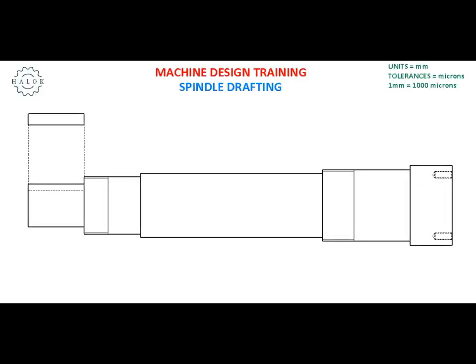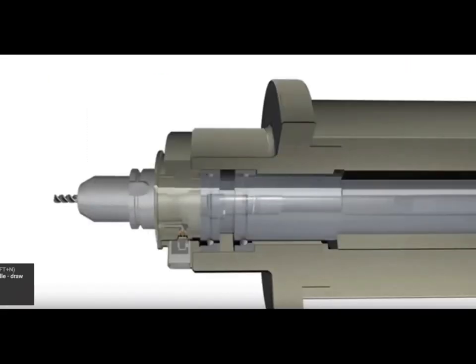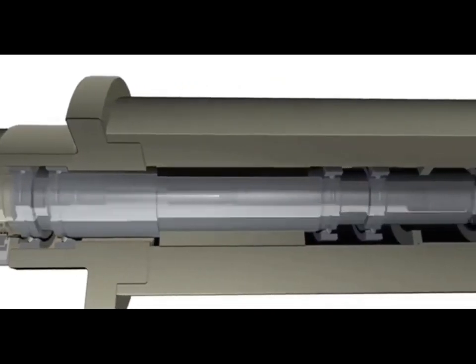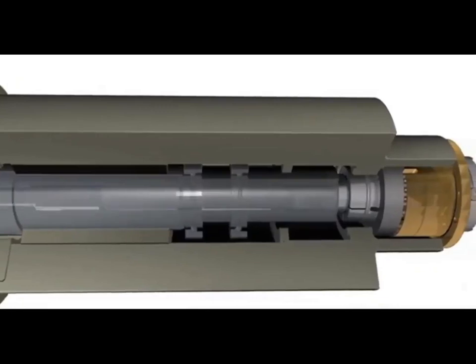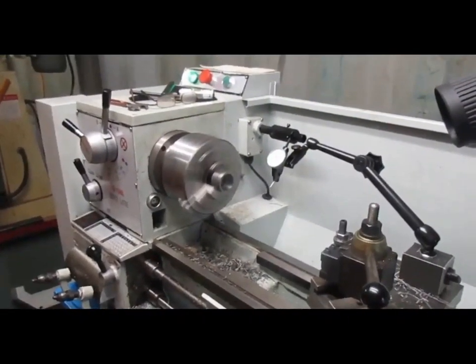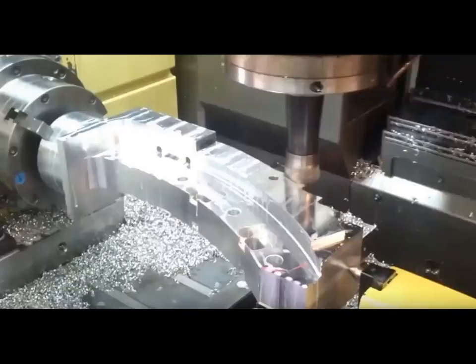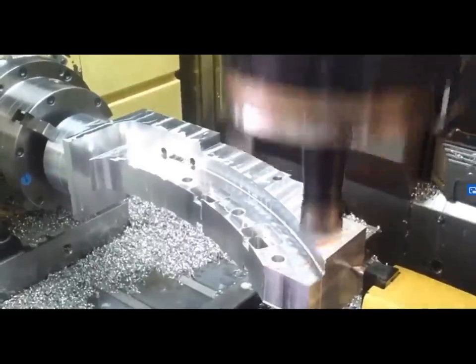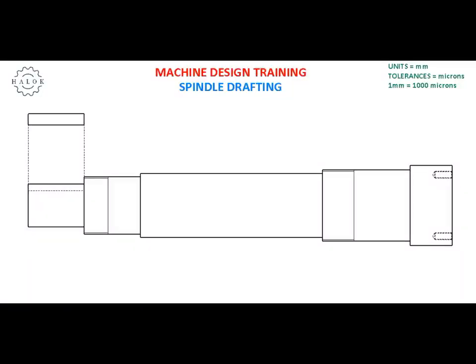Hello and welcome everyone to this industrial machine design training. Today we are going to see how to professionally draft a spindle. A spindle or a shaft is a mechanical component responsible for producing the necessary torque and rotation. We can see a spindle in a wide range of industrial applications — from conventional lathes to CNCs, and also in mining and agriculture industries. This is a vital component and today we are going to see how to professionally apply dimensions and tolerances based on international standards.